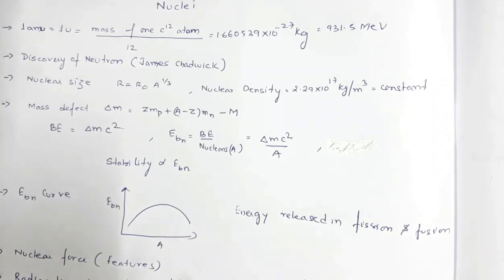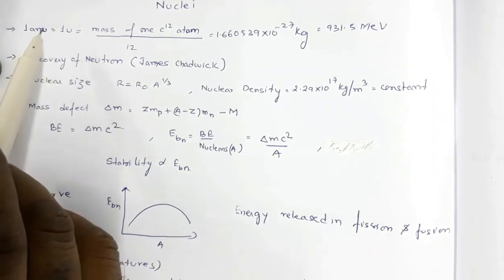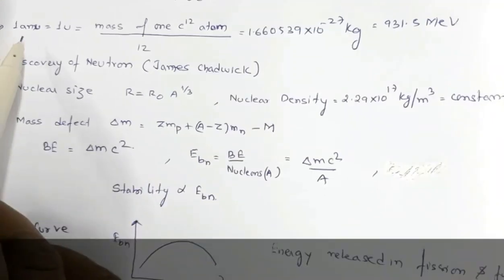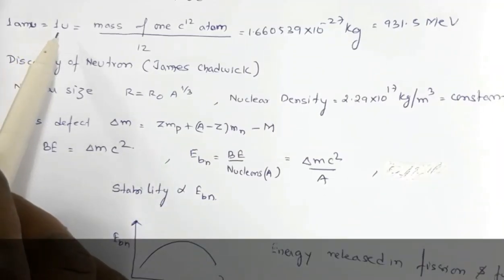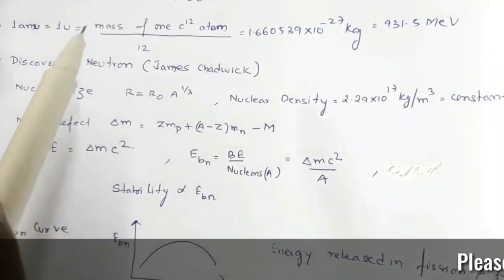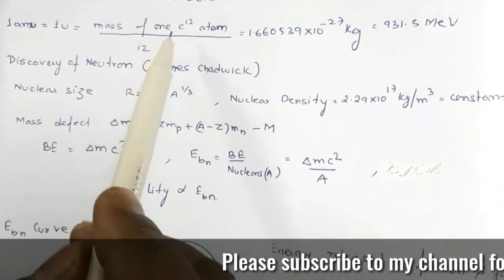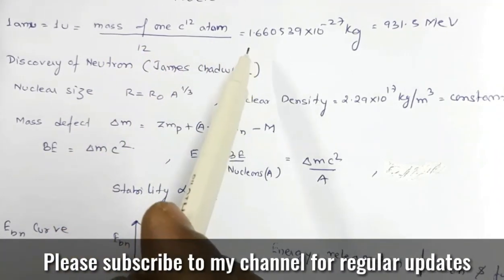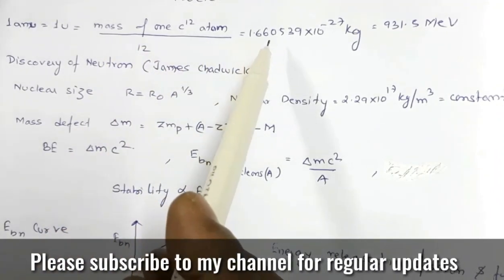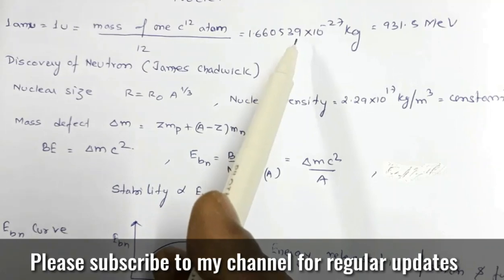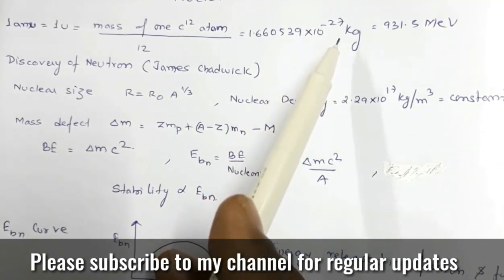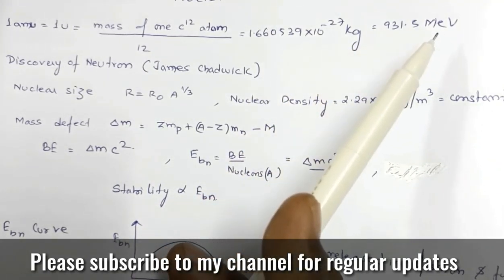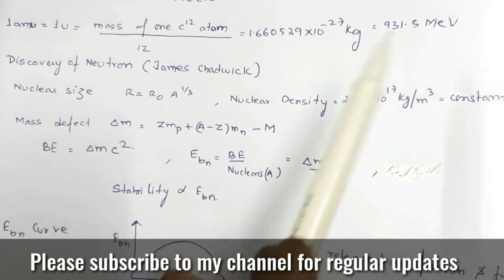Some important points: one AMU or one atomic mass unit can also be written as one u, and that is equal to the mass of one carbon-12 atom divided by 12. That value is 1.660539 × 10⁻²⁷ kg, and this mass is equal to 931.5 MeV of energy.